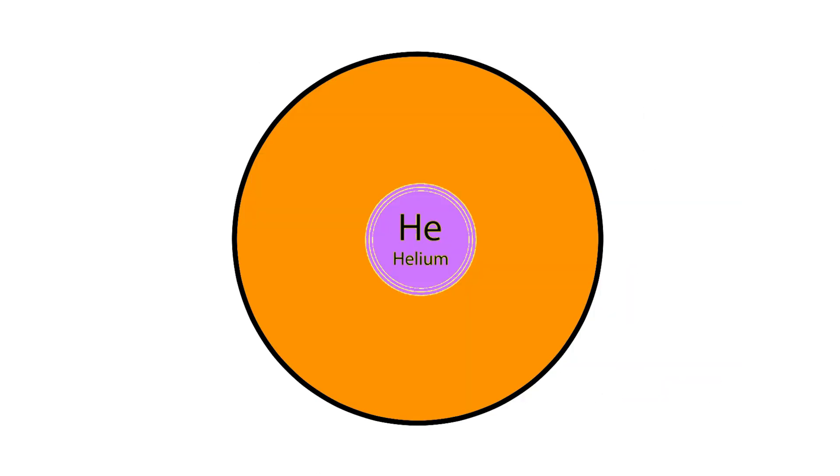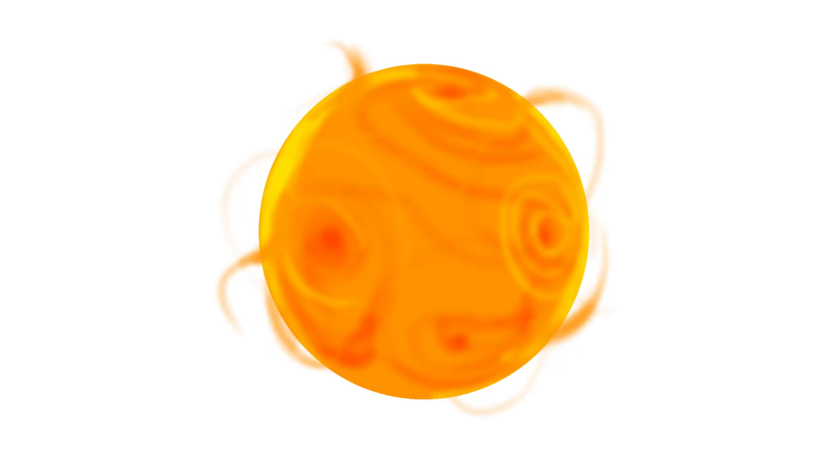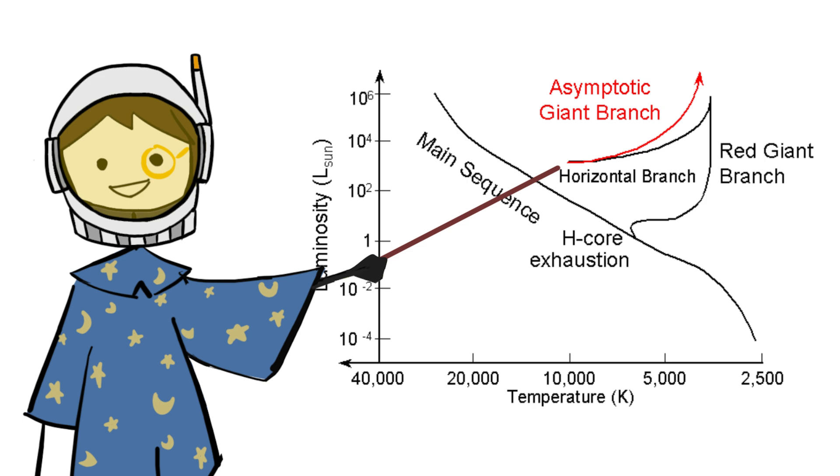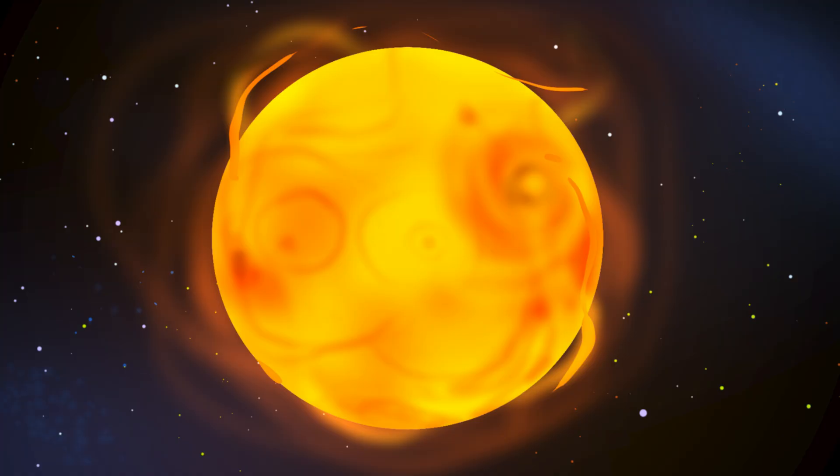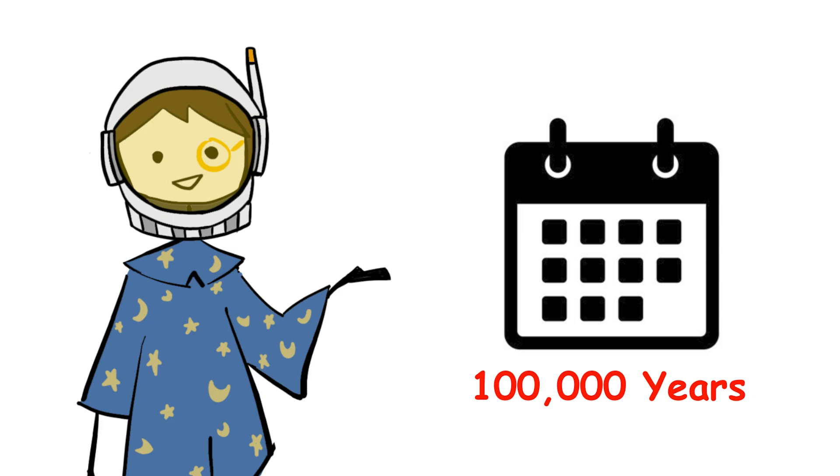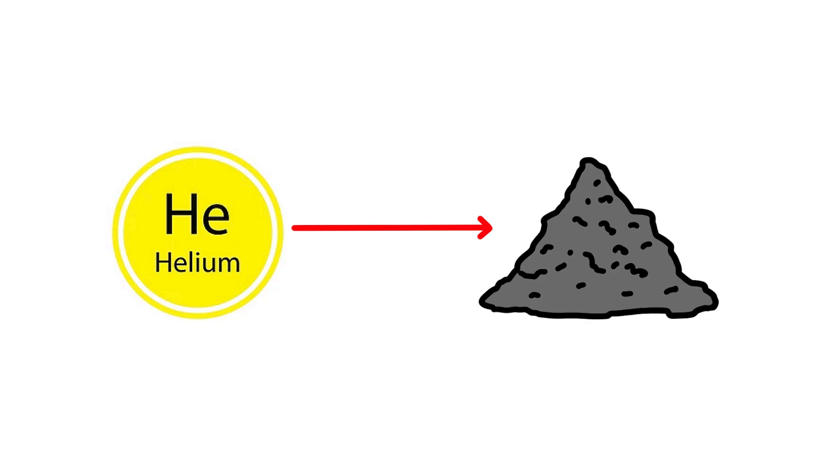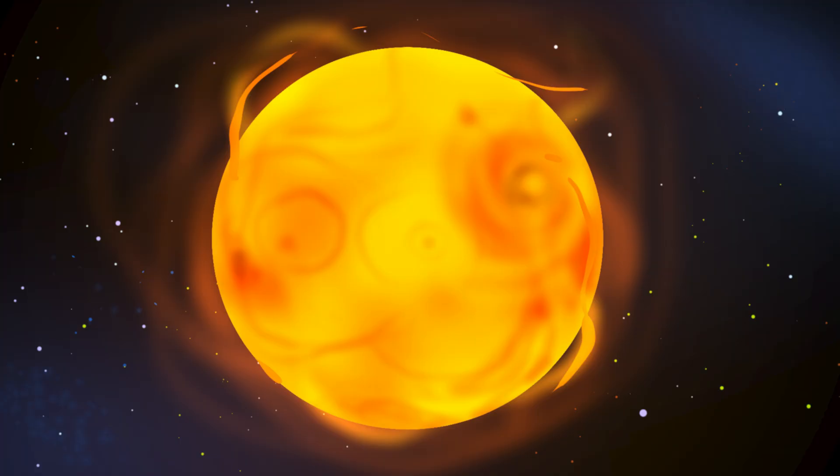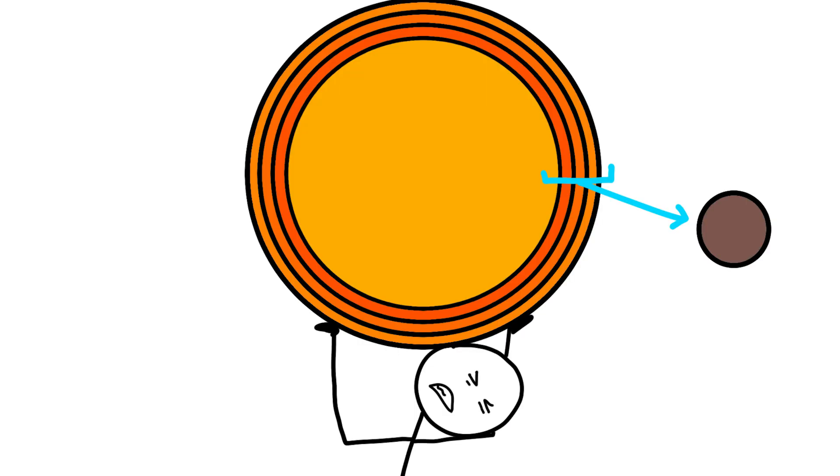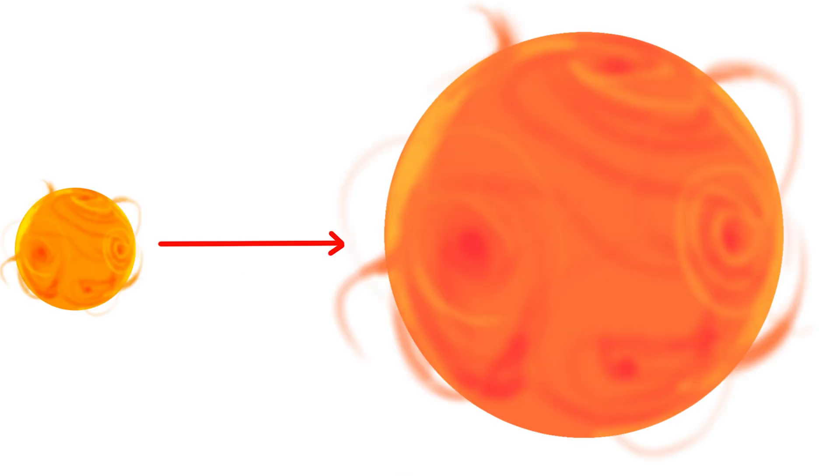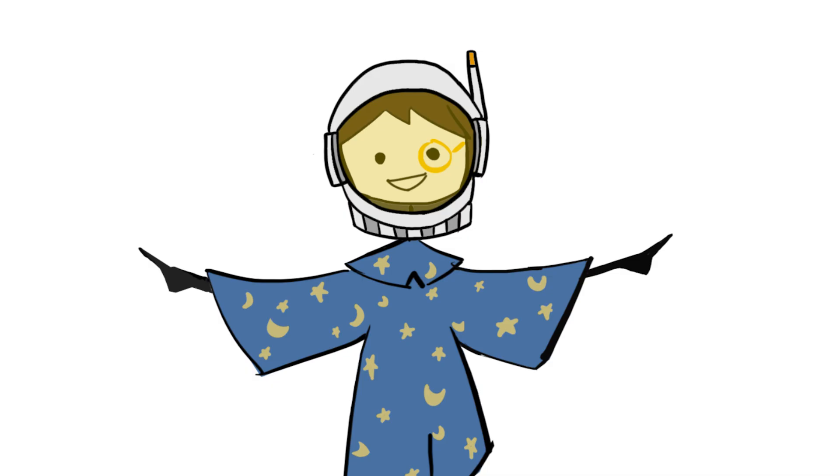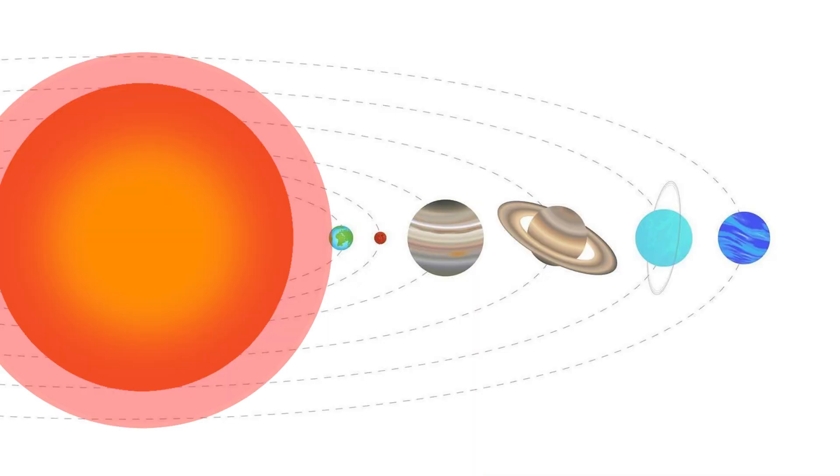In 6 billion years from now, the Sun's helium core is exhausted. A core of carbon and oxygen remains, surrounded by shells of helium and hydrogen fusion. The Sun enters the asymptotic giant branch, AGB phase, a period of extreme instability. The Sun begins to pulse. Every 100,000 years, the helium shell accumulates enough helium ash to reignite explosively in a thermal pulse. Each pulse ejects material from the outer layers, causing the Sun to expand further. The Sun reaches 200 times its original radius, large enough that the Earth's former orbit is now deep within the stellar atmosphere.